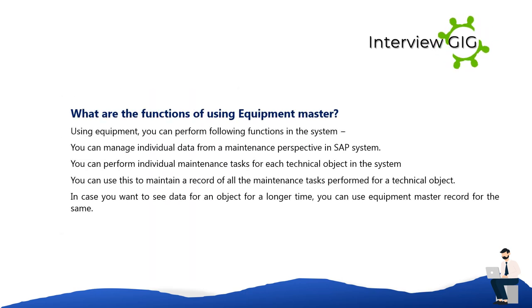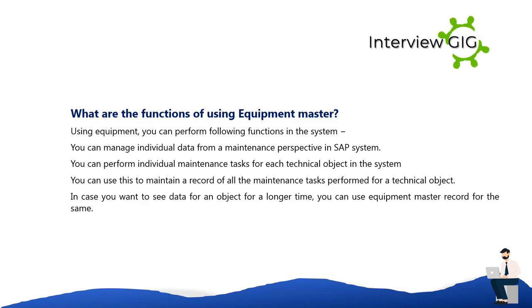What are the functions of using an equipment master? Using equipment you can perform the following functions: you can manage individual data from a maintenance perspective in the SAP system; you can perform individual maintenance tasks for each technical object; you can maintain a record of all maintenance tasks performed for a technical object; and if you want to see data for an object over a longer time period, you can use the equipment master record for the same.